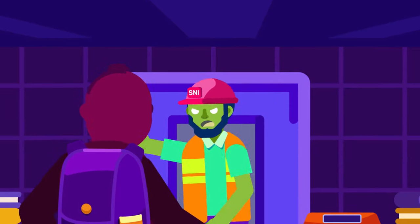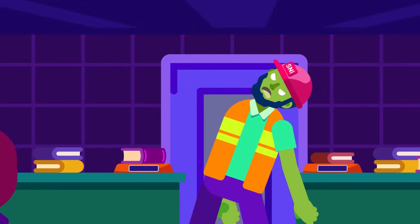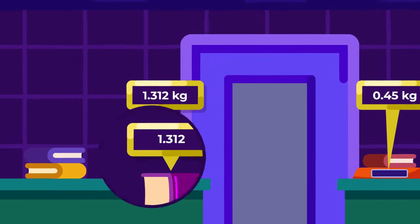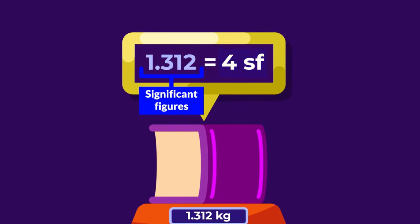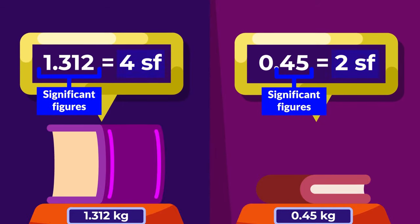We also determine the significant figures in mathematical operations. If we have two masses of different books, 1.312 kilograms and 0.45 kilograms, the first number has four significant figures, while the latter has two significant figures, which means both have different significant figures.